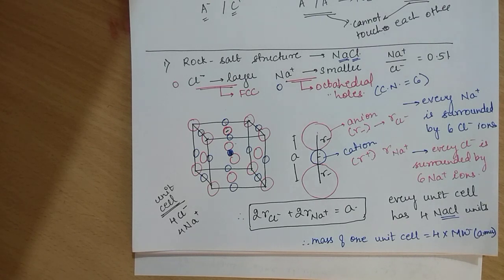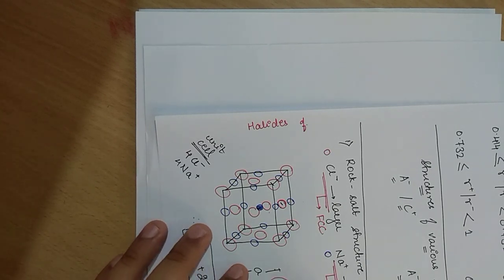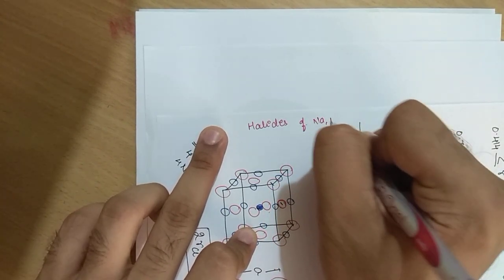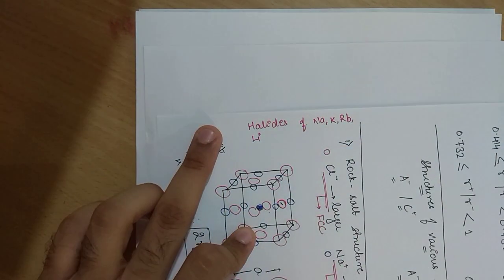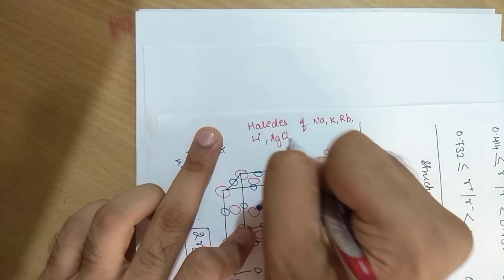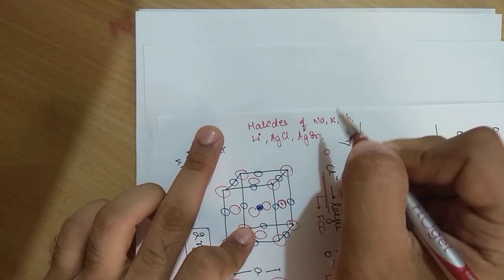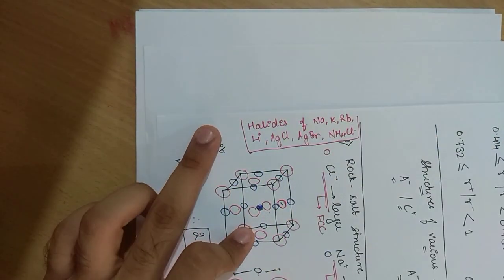Now there are a few examples to remember regarding which compounds have rock salt structure like NaCl. These include: halides of sodium, potassium, rubidium, and lithium — their halide compounds all have rock salt structure. Also AgCl, AgBr, and NH₄Cl. Please remember these examples — all of them have rock salt structure.